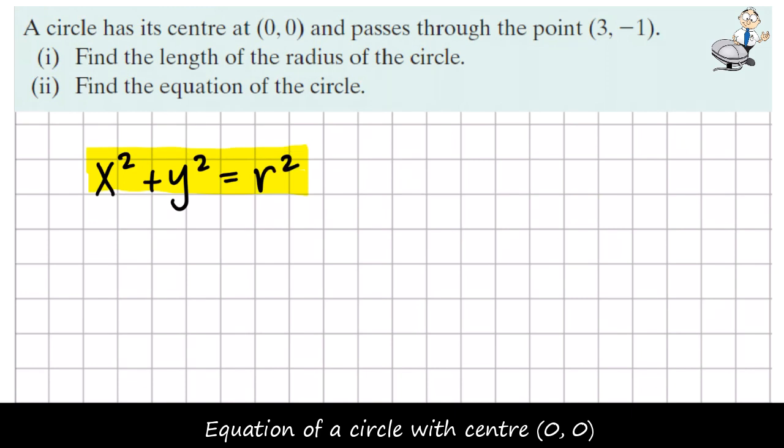We know it contains the point 3, negative 1, so we sub this in for x and y. So 3 squared plus negative 1 squared equals r squared. That's 9 plus 1 equals r squared, so 10 equals r squared, so r is the square root of 10.